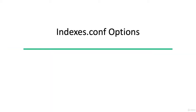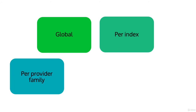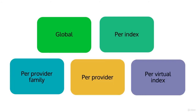Indexes.conf options. These are the options we can set in the indexes.conf file using stanzas and values. We can do it globally, per index, per provider family, per provider, and per virtual index. The bottom three mostly have to do with when you're working with Splunk and Hadoop, but the top two are important to understand for this class.